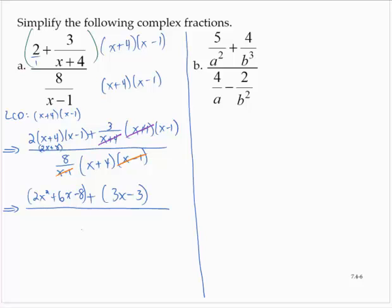Actually, we could leave the denominator as 8(x + 4), so I'm just going to leave it as 8(x + 4). Simplifying the numerator by combining like terms, I would have 2x² + 9x − 11. The denominator is 8(x + 4).